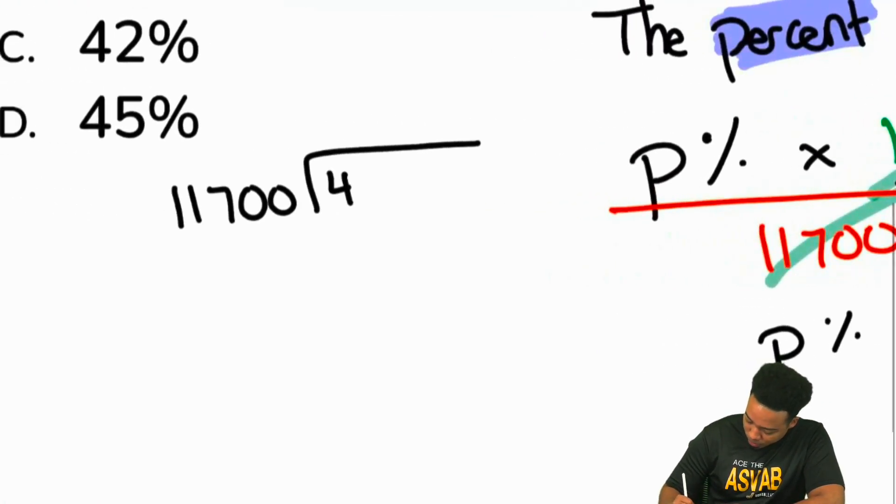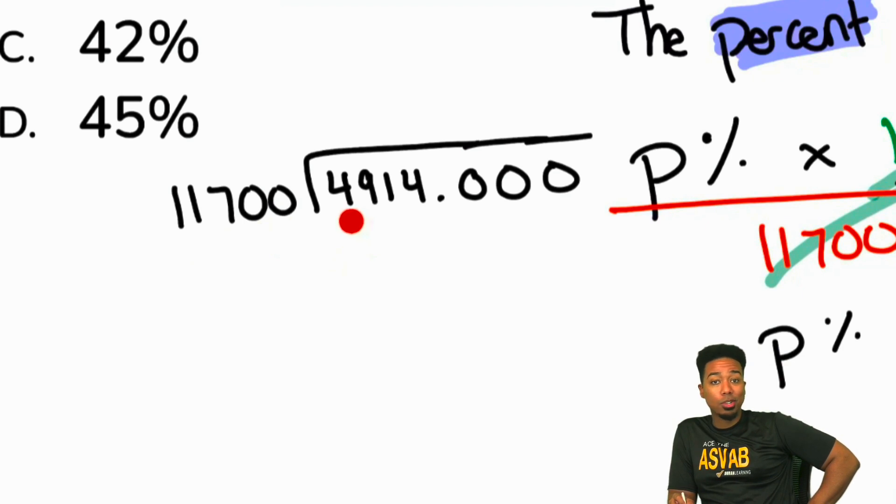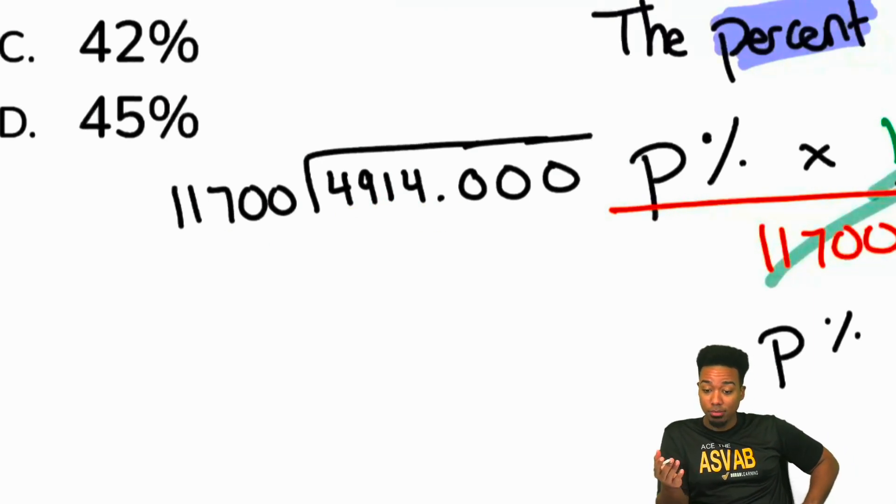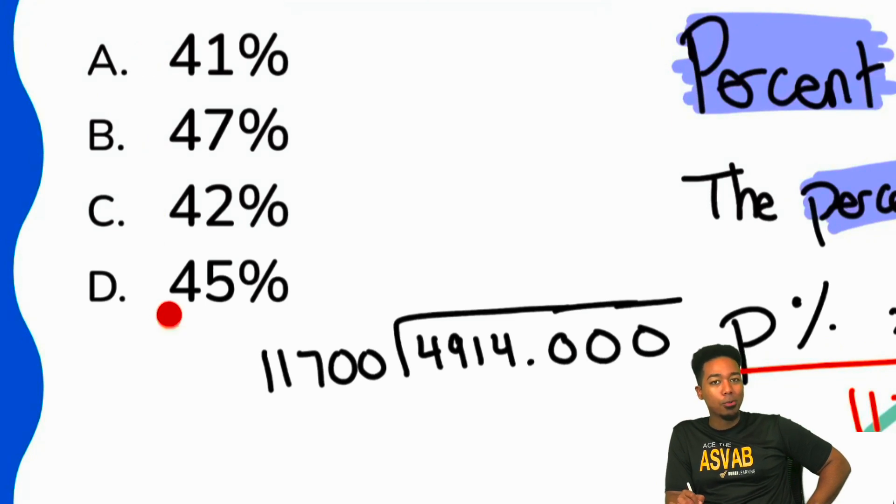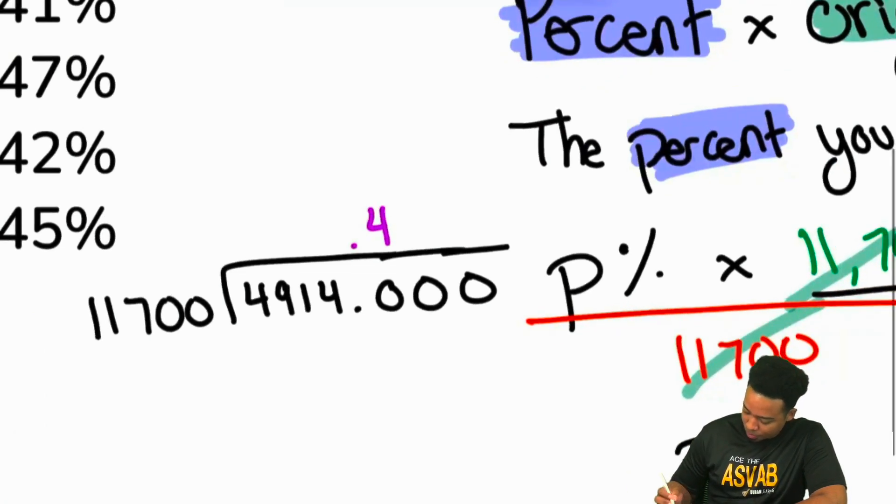But here we go. We'll go ahead and do it here: 11,700 divided into, let's not get the wrong number, 4914. And we'll go ahead and put a decimal, some zeros just in case. So we take a look here: 11,700 can't go into 4, can't go into 49, can't go into 491, can't even go into 4914. So we have to go over here. We have to treat this like 49,140. Everyone, if you had to take a guess, how many times do you think or suppose 11,700 might go into 49,140? Jared, Jalen, Delilah all saying four times. Yeah, you'd be correct. If you look at all these answer choices, they all start with four, so four is going to be a pretty good way to get started here.